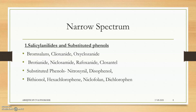Now the narrow spectrum anthelmintics: salicylanilides include closantel, clioxanide, oxyclozanide, brotianide, niclosamide, rafoxanide, and closanide. Substituted phenols include nitroxinil, disophenol, bithionol, hexachlorophene, niclofolan, and dichlorophen.